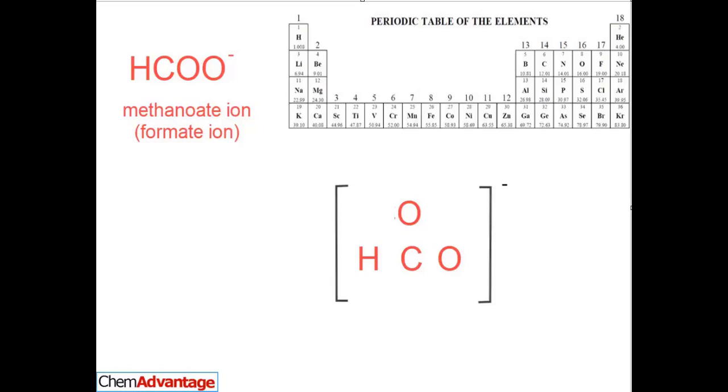When methanoic acid or formic acid acts as an acid, it loses its proton and leaves behind this formate ion, which is a weak base. The AP folks would show you the structure, but you probably would have guessed this one. Carbon is usually the central atom.